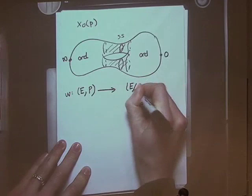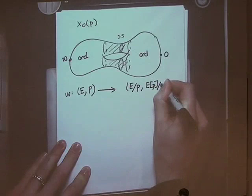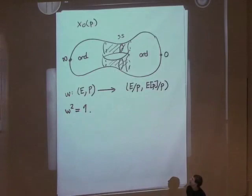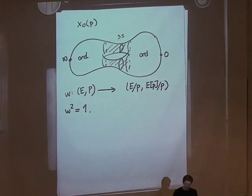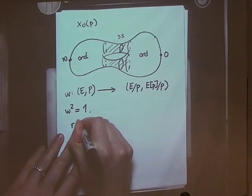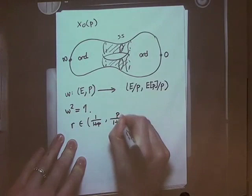The Fricke involution sends (E, subgroup) to E quotiented out by that subgroup, and then you get a subgroup of order p by taking E[p] quotiented out by p. You can check this is an involution. Geometrically, it takes the ordinary locus to the ordinary locus, swapping both ordinary loci — it takes infinity to 0 and 0 to infinity — and it also inverts the supersingular locus. You can also see what it does to the canonical subgroup.